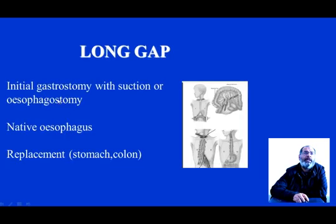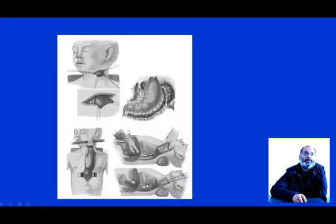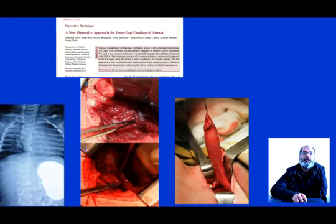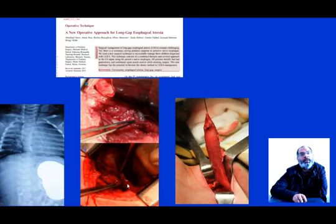Regarding long-gap oesophageal atresia, we perform initial gastrostomy with suction or oesophagostomy. We try to preserve the native oesophagus as much as possible; otherwise, some prefer replacement using stomach, colon, or even small intestine. I want to show you a new operative approach we are using in Monastir, Tunisia, using a combined thoracotomy and cervicotomy for long-gap oesophageal atresia. The cervicotomy allows enhanced dissection of the upper pouch, corrects any curvature, and enables end-to-end anastomosis.